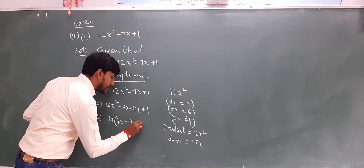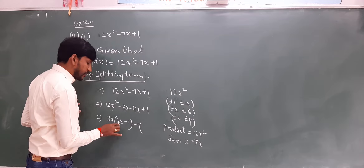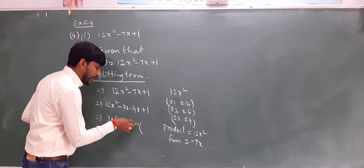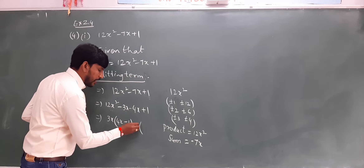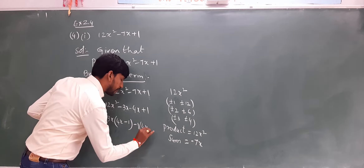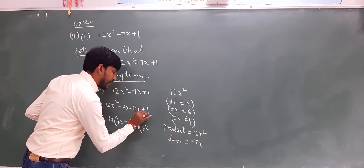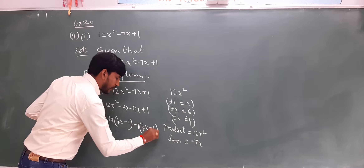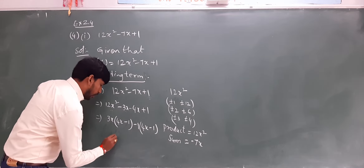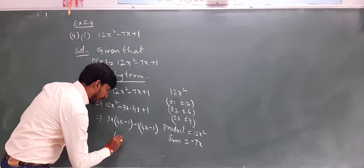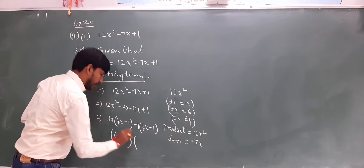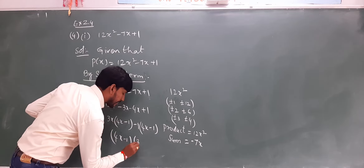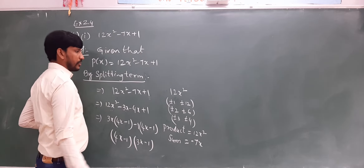In the next two terms, I am going to take minus 1 as the common because I should get here plus 4x. To get plus 4x, you take minus 1 as common. So here 4x — with minus 1 outside, from plus 1 you will get minus 1 here. So the left-over part is 4x minus 1 as common in both terms. The other factor is 3x minus 1.